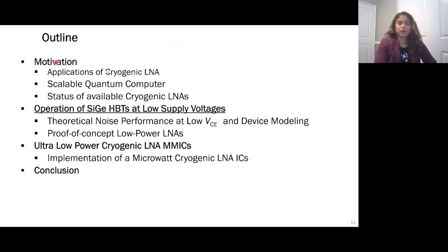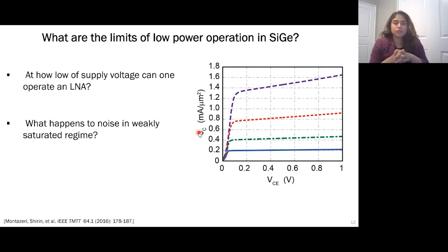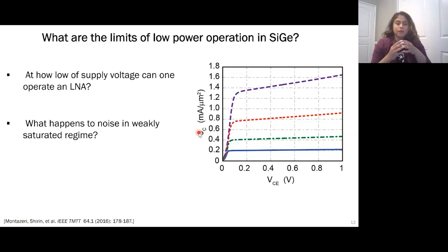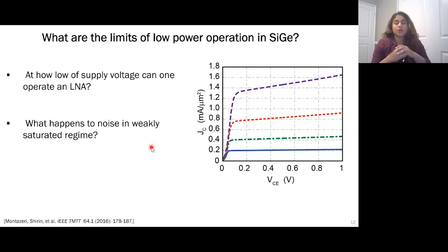To answer this, we need to address two specific questions: at how low a supply voltage can we operate these LNAs, and what happens to the noise in the weakly saturated region when we bring the supply voltage down? Noise is the number one important factor for these LNAs, and there is typically a very strong trade-off between power dissipation and noise performance for any electronic component, including low-noise amplifiers.